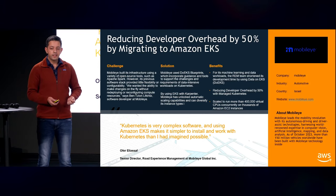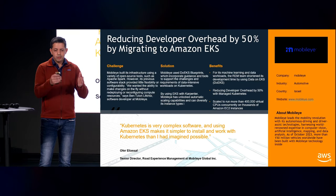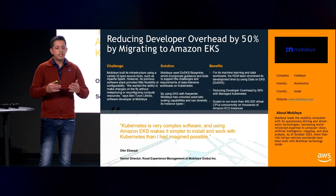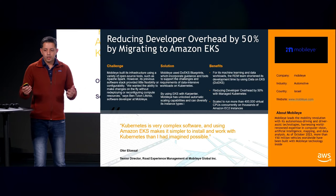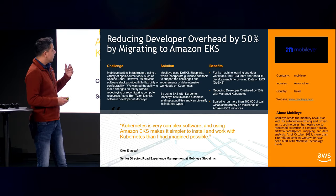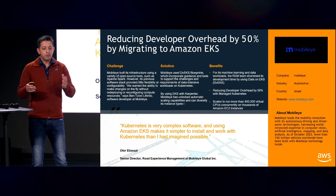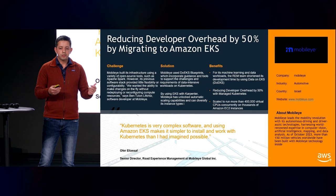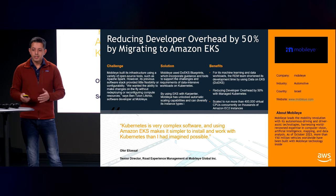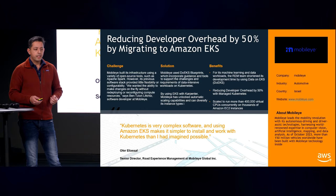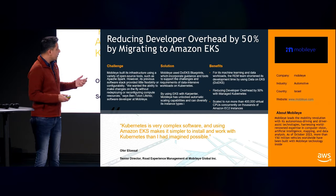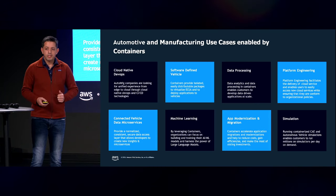Here's an example: Mobileye, a company in Israel working in autonomous driving, had a requirement to scale their Spark workloads to millions of jobs. We worked closely with them to optimize their infrastructure on Kubernetes, and ultimately they were able to reduce the number of components they had to manage by 50% using EKS and Spark.